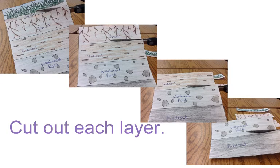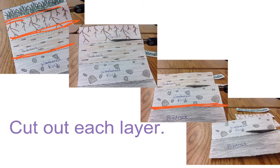After that, you're going to actually cut out each of these specific layers. So go ahead and take a minute to do that. Make sure that you cut out your humus along the line, topsoil along the line, subsoil along the line, and bedrock and weathered rock along the line.